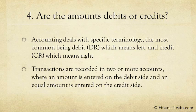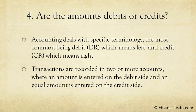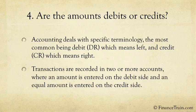For example, 'debit the amount of rent' means that the amount for rent is recorded on the left side. The rule of debit and credit, or double entry accounting, states that transactions are recorded in two or more accounts where an amount is entered on the debit side and an equal amount is entered on the credit side. This is a fundamental theory behind accounting procedures.